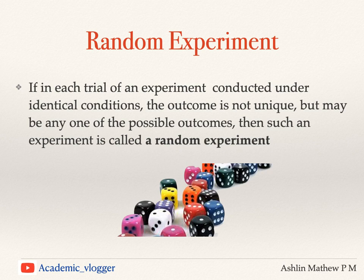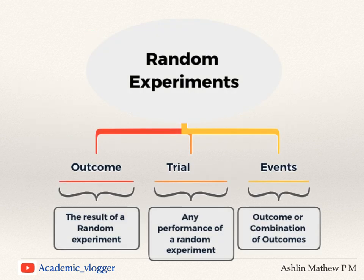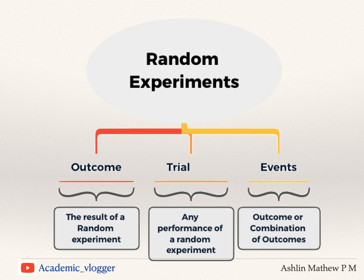While discussing random experiments, we must be familiar with some key terms. The first term is 'outcome' — an outcome is a result of a random experiment. For example, if I am throwing a die, the face I get is an outcome. The next term is 'trial' — any performance of a random experiment is called a trial. So if I am throwing a die twice, I have two trials.